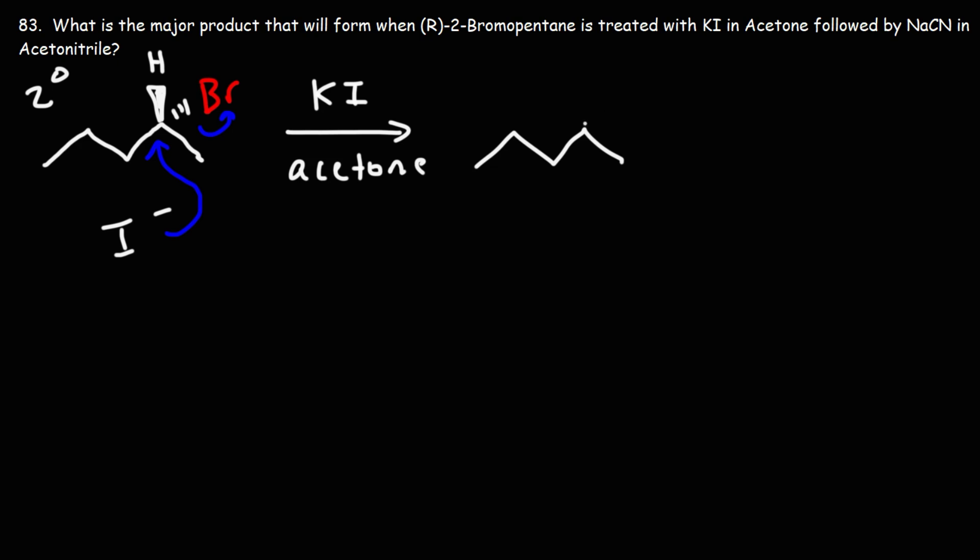Bromine was in the back, so iodine is going to be in the front, which means hydrogen is in the back. Before we had the R isomer, now we have the S isomer.